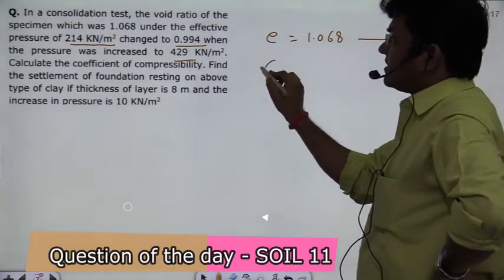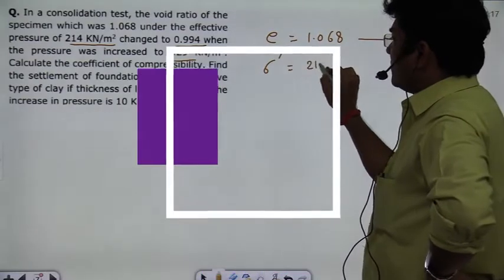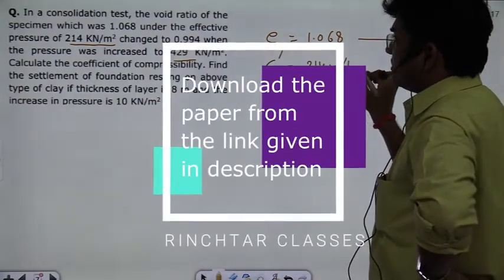How much pressure was in starting? If you talk about effective pressure, the starting pressure was 214 kilonewton per meter square.